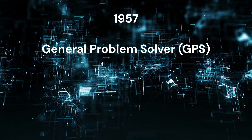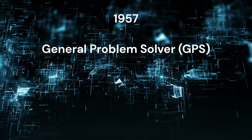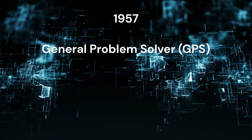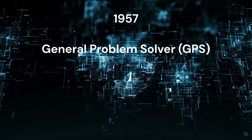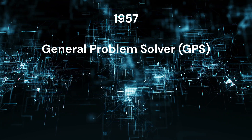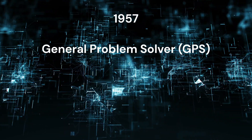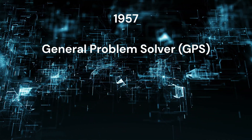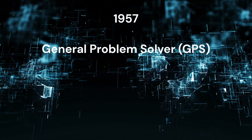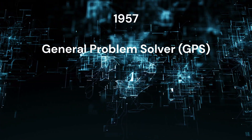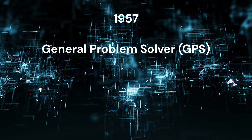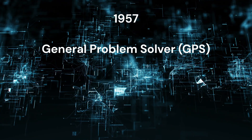The General Problem Solver, GPS, was a landmark achievement in the field of artificial intelligence, AI, developed by Alan Newell and Herbert A. Simon in 1957. The GPS was an early attempt to create a general-purpose problem-solving system that could tackle a wide range of problems by applying a set of heuristics and problem-solving techniques, designed to mimic human problem-solving strategies and solve problems in a logical and systematic manner.